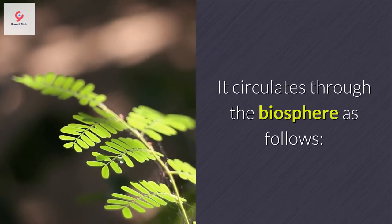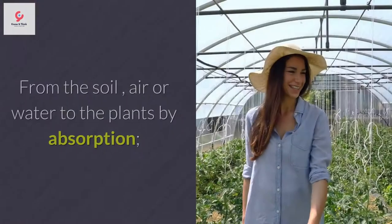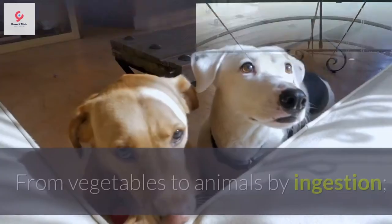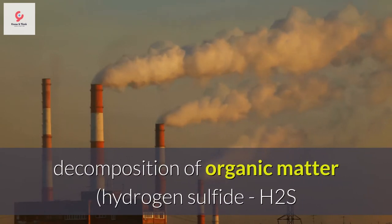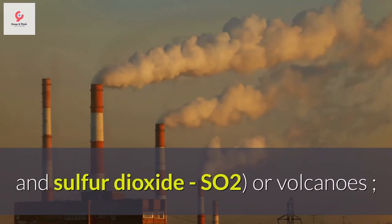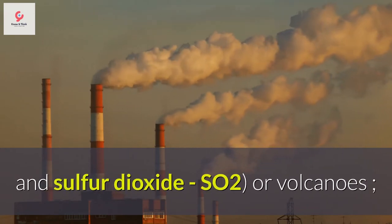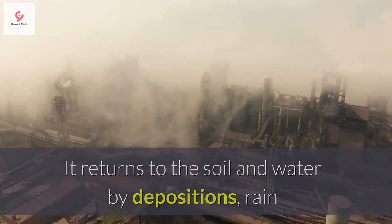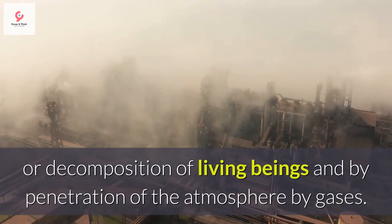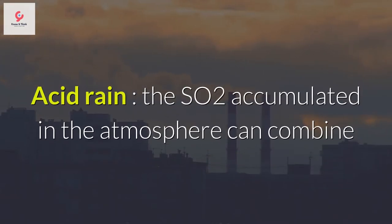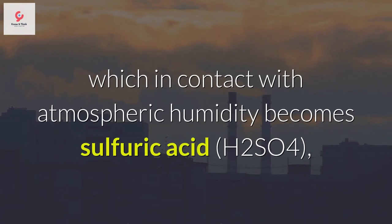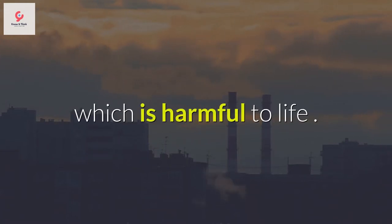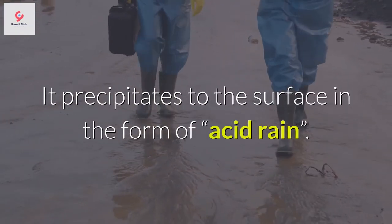Sulfur cycle: it circulates through the biosphere as follows — from the soil, air, or water to plants by absorption; from vegetables to animals by ingestion. The atmosphere receives sulfur in the form of gases emitted by decomposition of organic matter — hydrogen sulfide (H₂S) and sulfur dioxide (SO₂) — or from volcanoes. It returns to the soil and water by depositions, rain, or decomposition of living beings. The SO₂ accumulated in the atmosphere can combine with another oxygen atom to form sulfur trioxide (SO₃), which in contact with atmospheric humidity becomes sulfuric acid (H₂SO₄), which is harmful to life, precipitating to the surface in the form of acid rain.